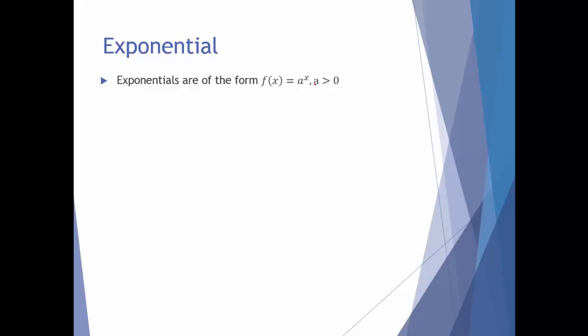Exponentials are of the form f of x equals a to the x, where a is strictly larger than 0. Notice this is written as f of x, telling me that x is my variable. In order to be considered an exponential function, look where your variable is located — it's up in the exponent. That's why we call them exponential functions.